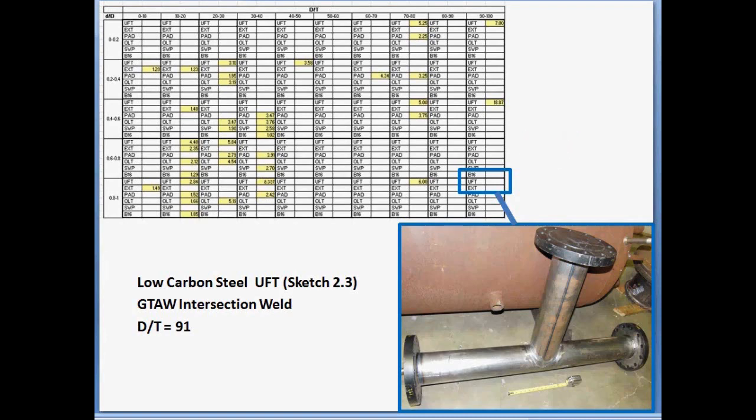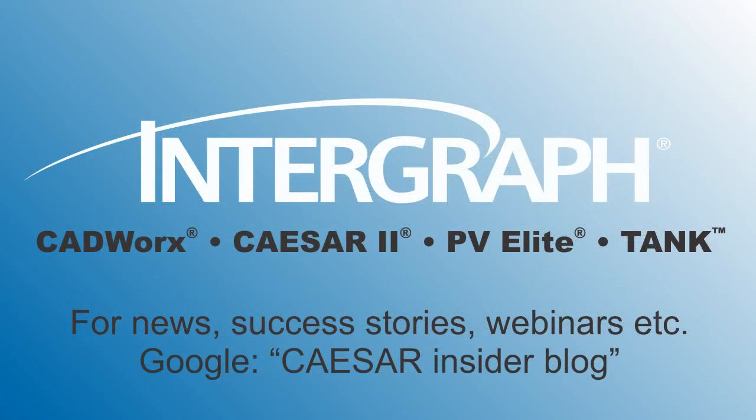Piping and vessel designs have both primary and secondary requirements. Primary failure or sustained failure mechanisms are collapse, excessive displacement, and burst. Secondary failure mechanisms are ratcheting and fatigue. Thank you for sharing your time with us. For CAESAR 2 news, success stories, and free webinars, please visit caesarinsiderblog.com.